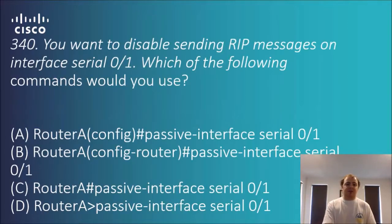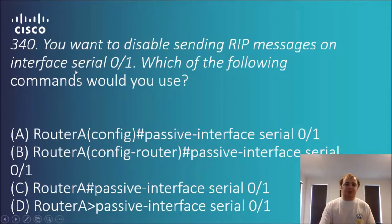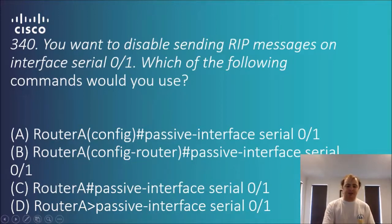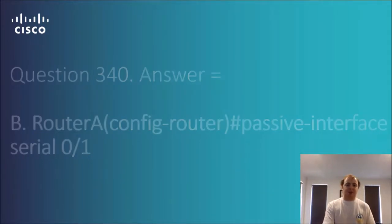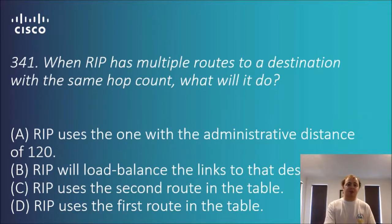Question 3.40: you want to disable sending RIP messages on interface Serial 0/1. Which command would you use? The options are variations of 'passive-interface serial 0/1' in different modes. To change a routing configuration you need to be in router configuration mode. The answer is B — from router config mode, use the command 'passive-interface serial 0/1'. It's a matter of knowing the correct syntax and being in the right mode.